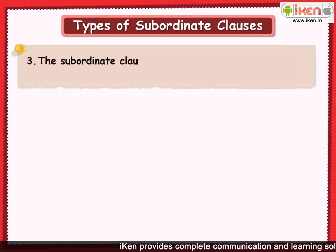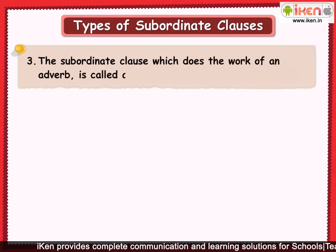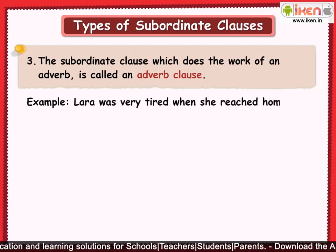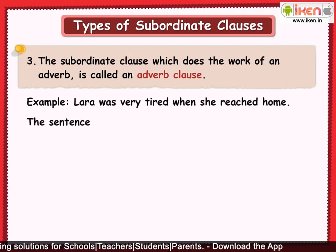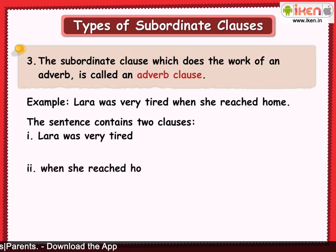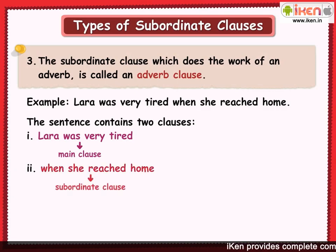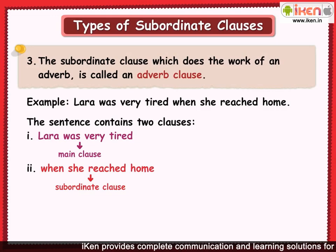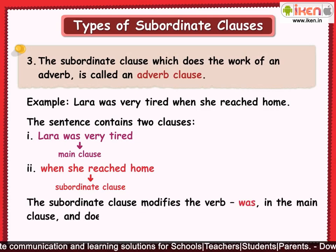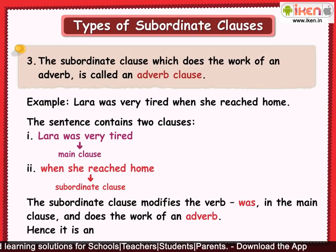The subordinate clause which does the work of an adverb is called an adverb clause. For example: 'Lara was very tired when she reached home.' This sentence has two clauses: 'Lara was very tired' and 'when she reached home.' The second clause is the subordinate clause and modifies the verb 'was' in the main clause, doing the work of an adverb — hence it is an adverb clause.